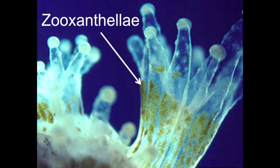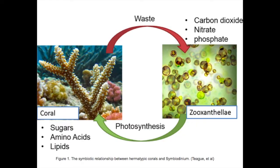Corals have a mutualistic, or symbiotic, relationship with their zooxanthellae, meaning both organisms get something from the other. Corals breathe in oxygen and breathe out carbon dioxide and other waste products. Zooxanthellae are able to use that carbon dioxide — unusable by the coral — and take in light to photosynthesize. Through photosynthesis, zooxanthellae create sugars and lipids, or fats, which they share with the coral, providing 90% of the coral's energy.